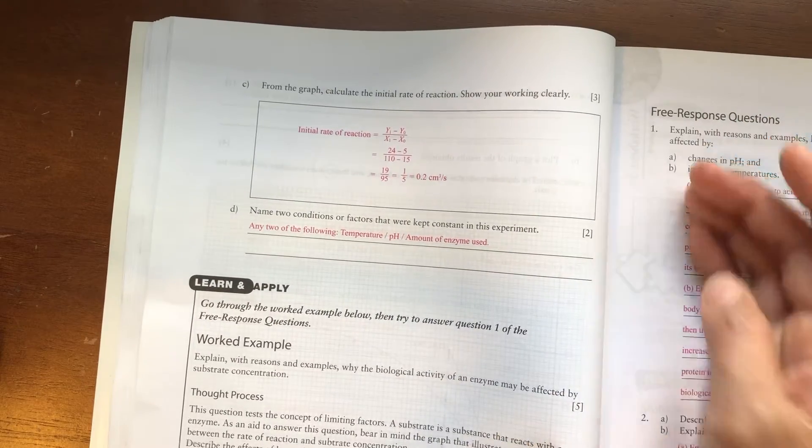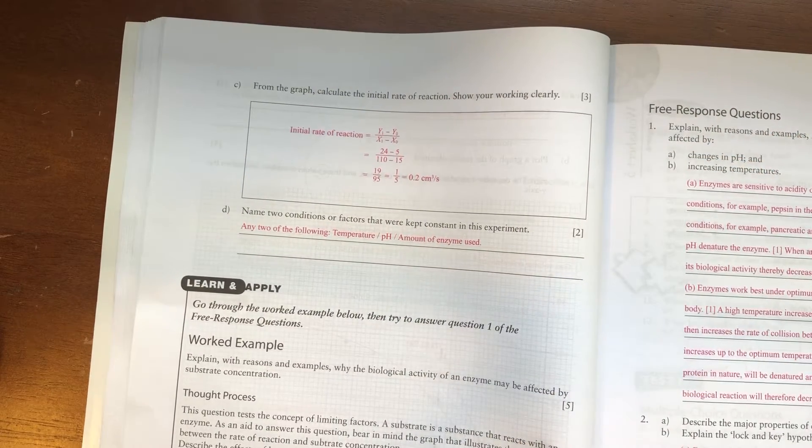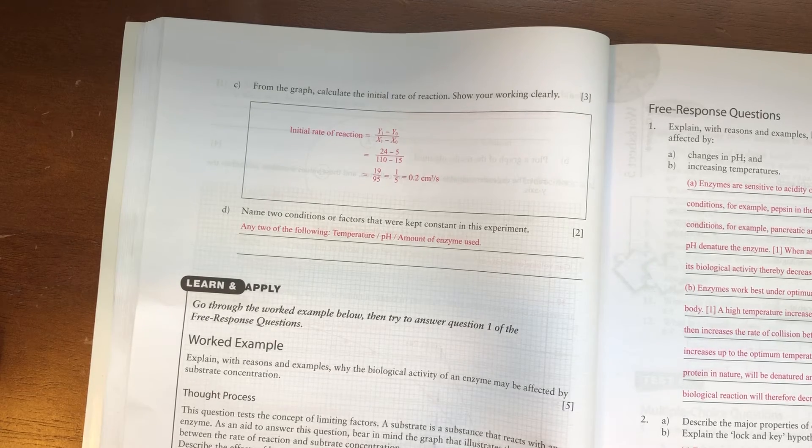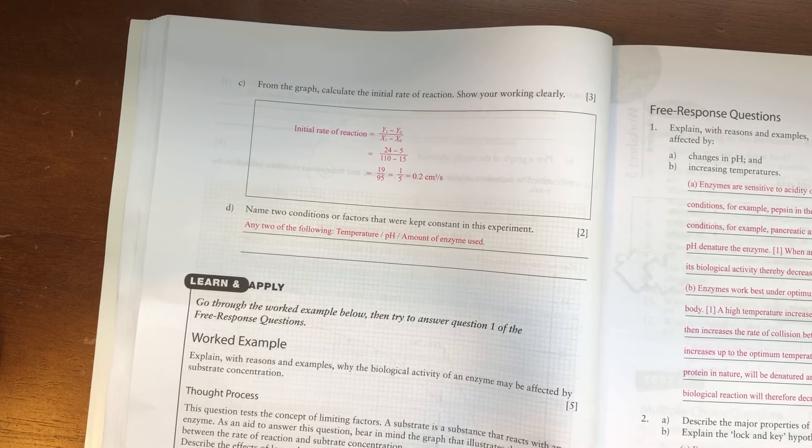Then the two conditions or factors that were kept constant in the experiment is temperature, pH or the amount of enzyme used. Thank you girls.